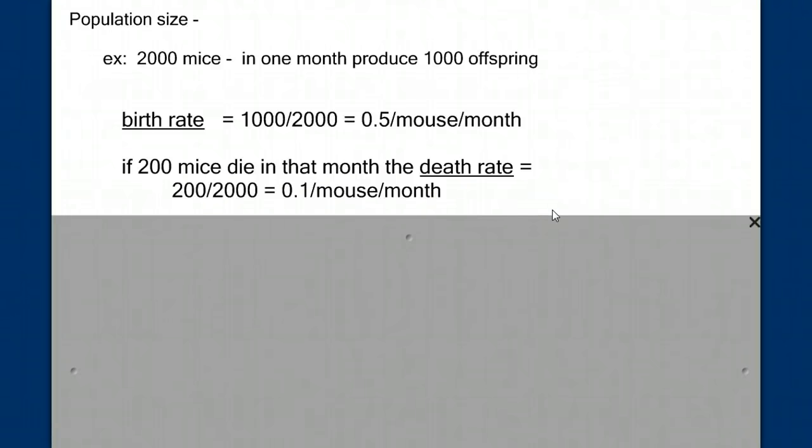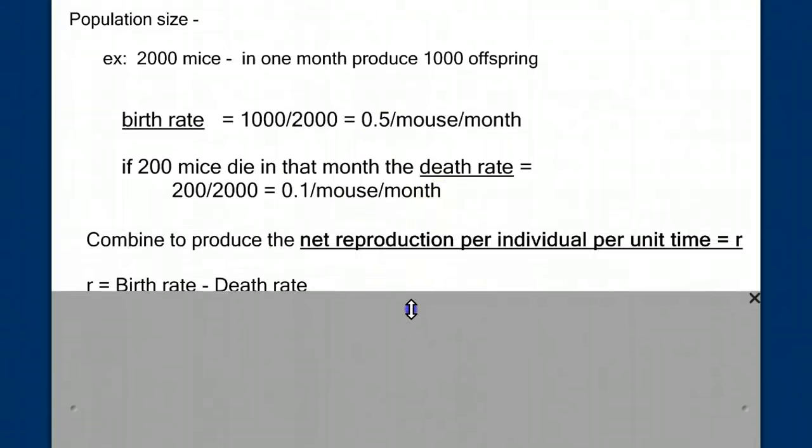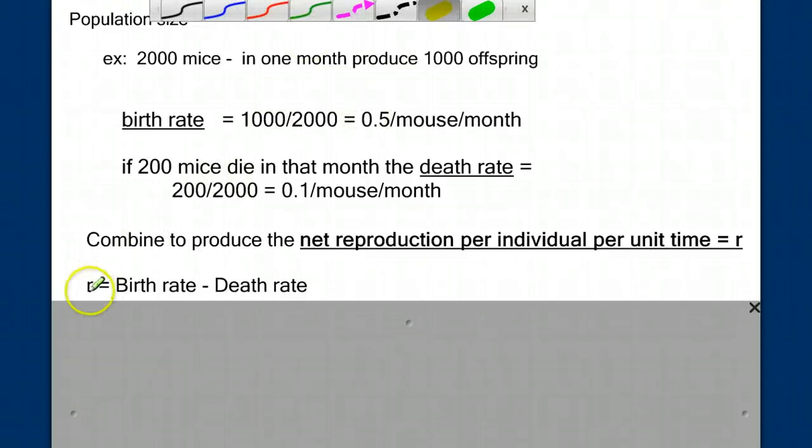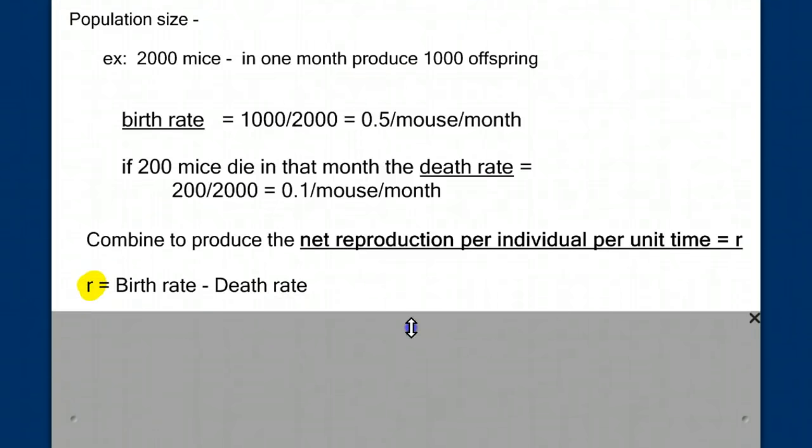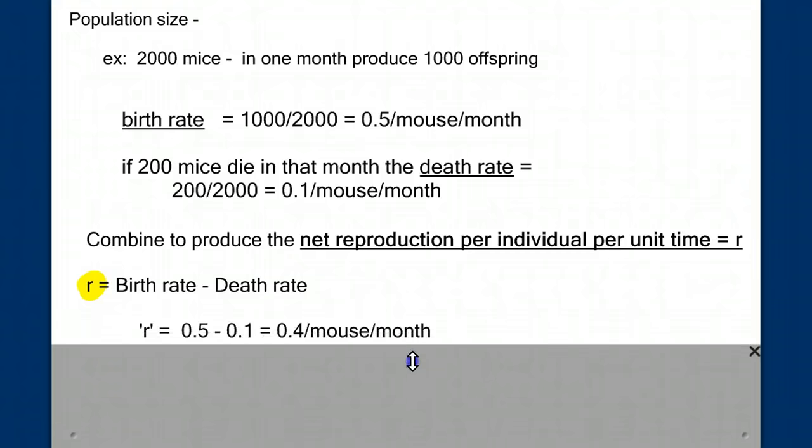Now then, to calculate the growth rate of this population, we need to take the number of births, or the birth rate, minus the death rate, to give us our net overall rate of growth per unit time. The birth rate minus the death rate, and we designate that with the letter R for rate. For our example, the rate, or R, is 0.5 minus 0.1, so our overall rate of growth, or net reproductive rate, is 0.4 per mouse per month. Now I don't really know if mice populations grow at this rate, I made this example up as I go.